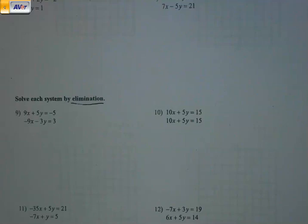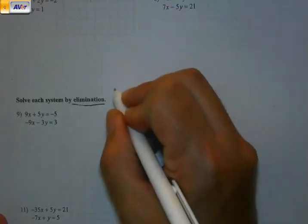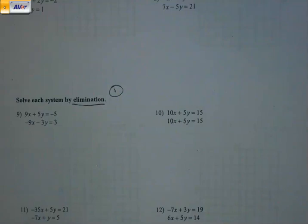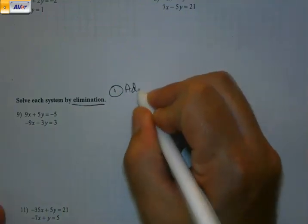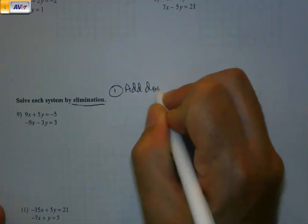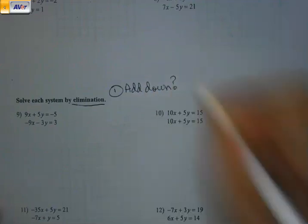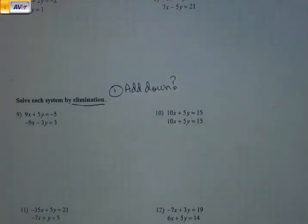So how do I do that? First option, there's going to be three options. This first option is just going to be, can I just add down and get rid of a variable? Sometimes this is going to work.